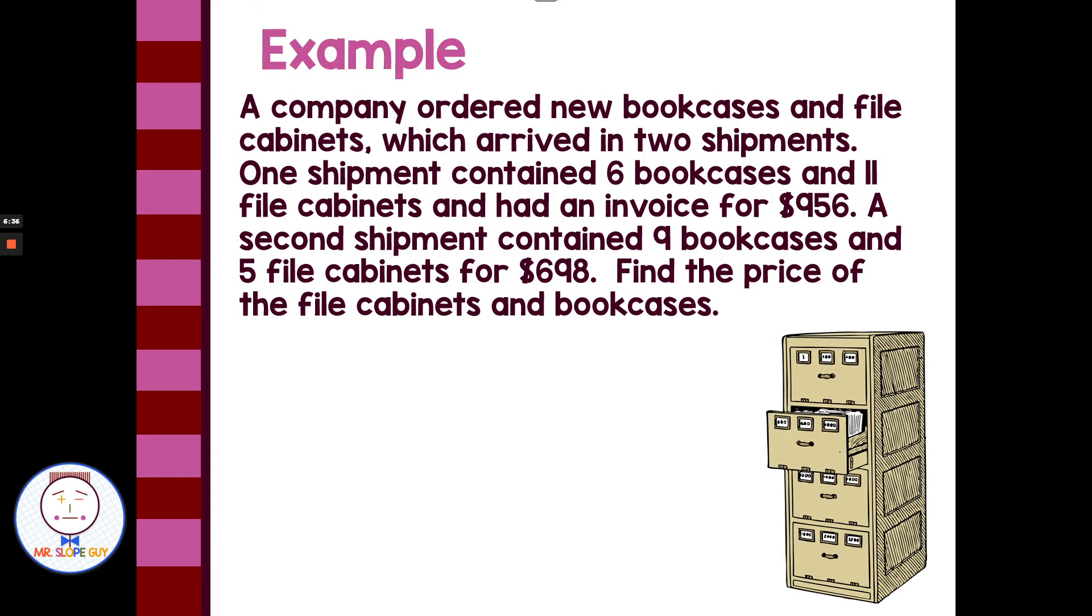All right, new example. Let's start with a company ordered new bookcases and filing cabinets, which arrived in two shipments. One shipment contained six bookcases and 11 filing cabinets and had an invoice for $956. A second shipment contained nine bookcases and five filing cabinets for $698. Find the price of the filing cabinets and bookcases. We have these bookcases and filing cabinets used throughout each sentence, so those are obviously our two variables. So we'll let B be bookcases and we'll let F be filing cabinets.